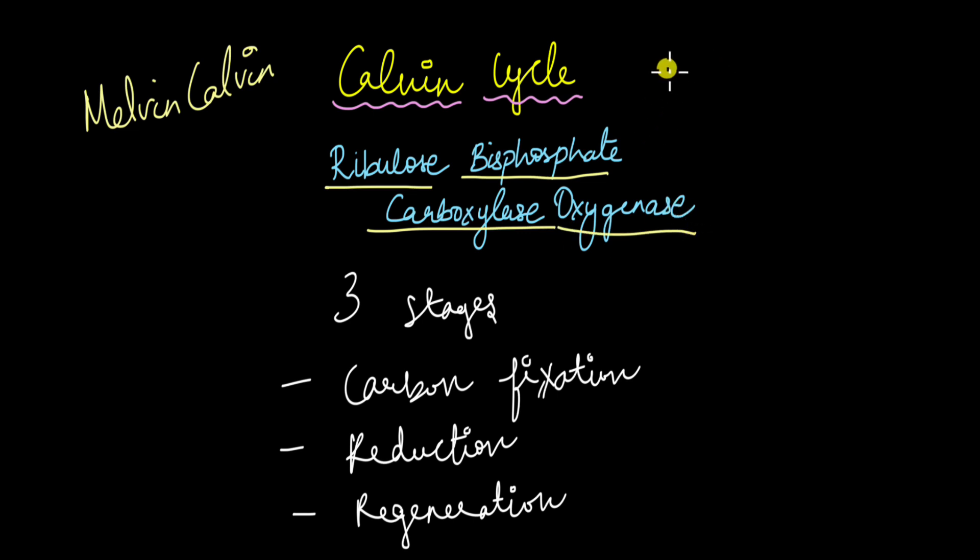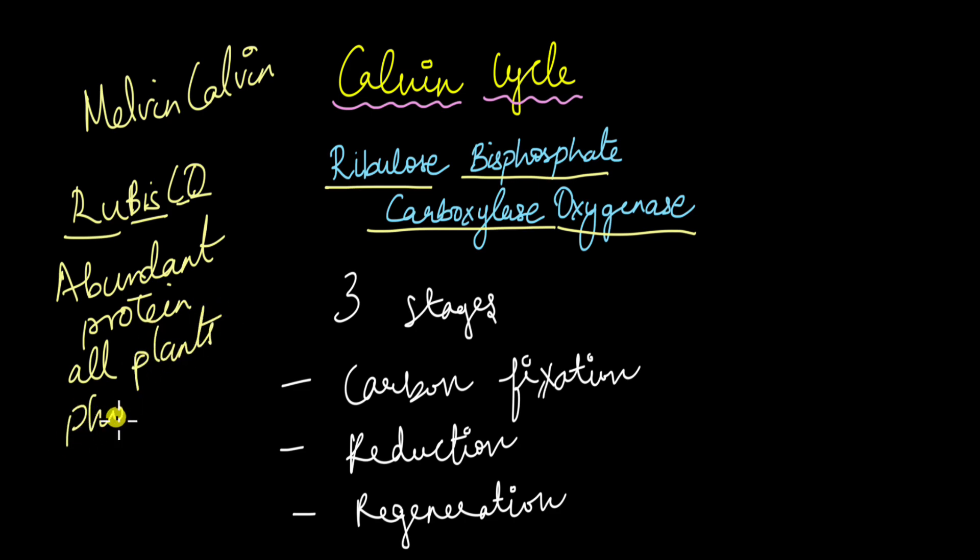I know this is quite a mouthful to say and remember. Instead, you can remember it as rubisco. RU stands for ribulose, bis stands for bisphosphate, C stands for carboxylase and O stands for oxygenase. This is the most abundant enzyme, the most abundant protein on earth because all plants, all algae, anything that photosynthesizes contains this enzyme to convert carbon dioxide into glucose.